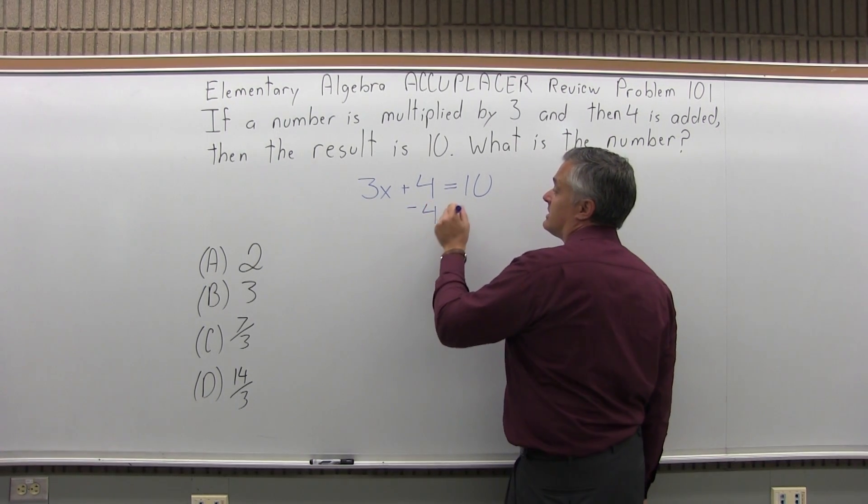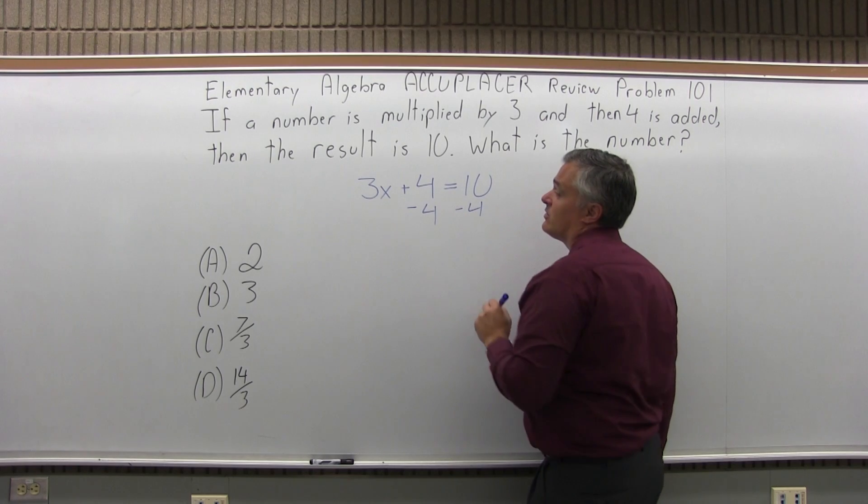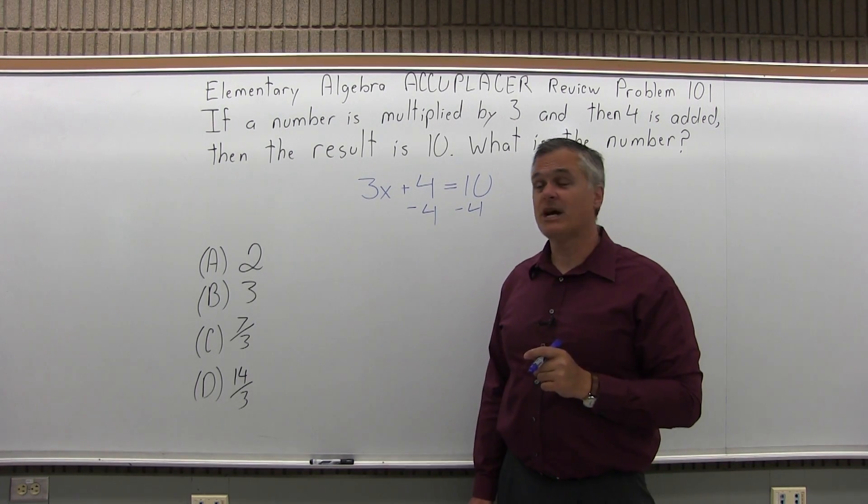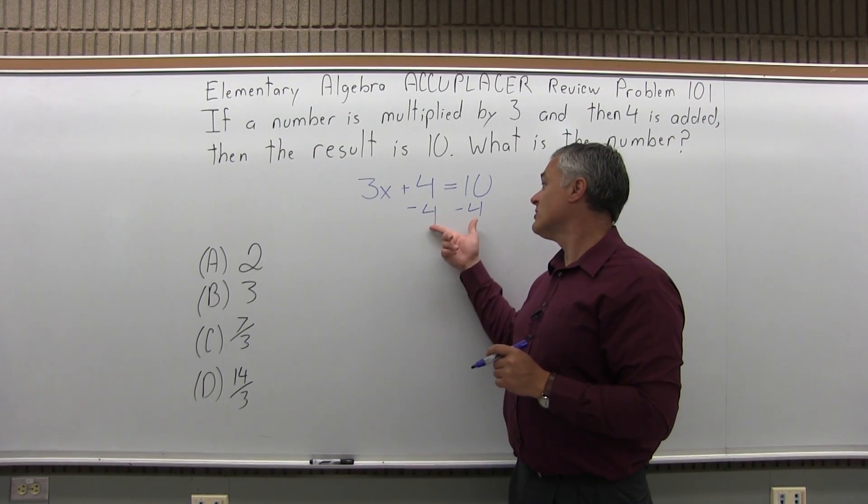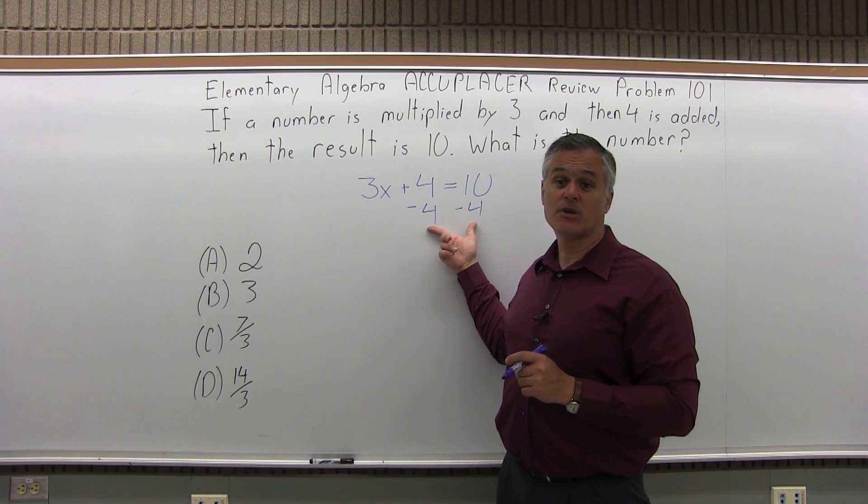First let's get rid of the 4 that's on the left side of the equation by subtracting 4 from both sides. When I have an equation, I can do anything I want as long as I do the same thing on both sides.